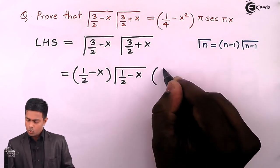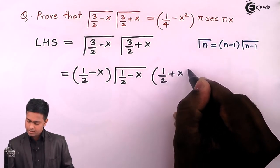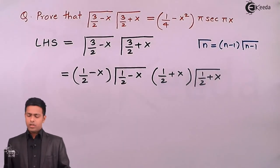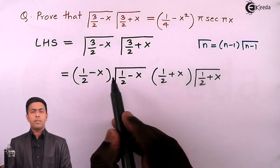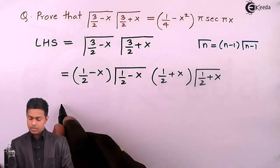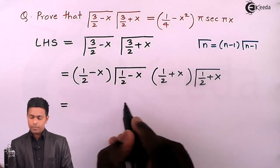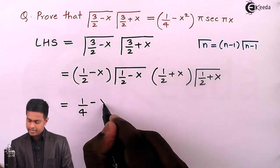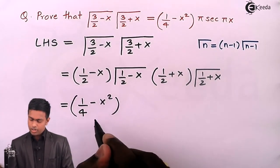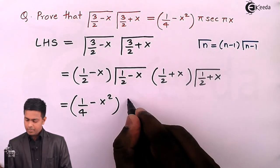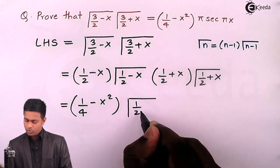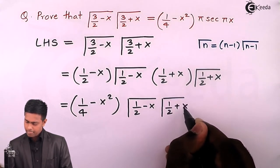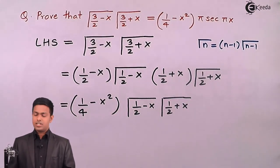Now the terms which are outside the gamma function, if we multiply these terms, we will get 1/2 times 1/2, that is 1/4, and this will become minus x². So here we got this term, and the remaining two gamma functions are gamma(1/2 - x) times gamma(1/2 + x).